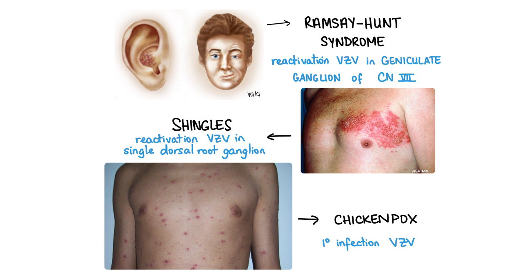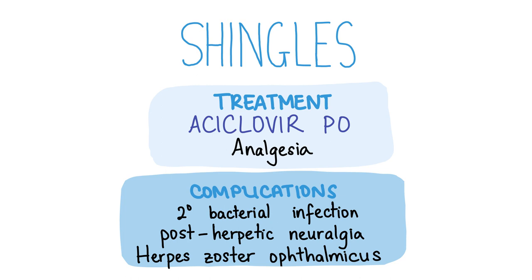The first symptom of shingles is severe pain associated with malaise, fever, headache and lymphadenopathy. This is followed by the eruption of erythematous papules and vesicles which blister before crusting over. These occur in the region of the skin supplied by one dermatome, therefore the rash does not cross the midline. Oral acyclovir is first-line management for shingles. Analgesia such as paracetamol and NSAIDs must also be given. Complications include scarring, secondary bacterial infection, post-herpetic neuralgia and herpes zoster ophthalmicus.